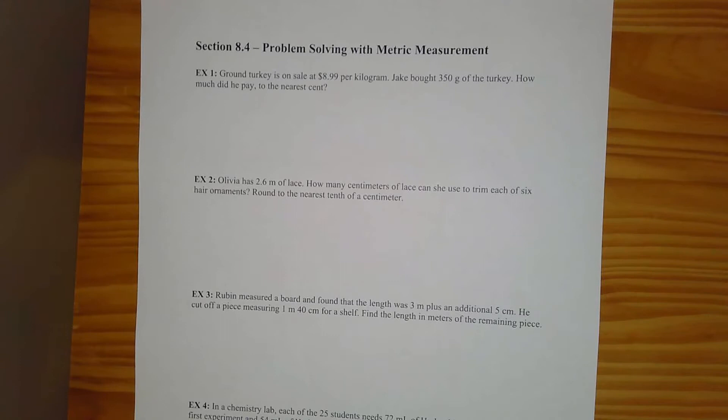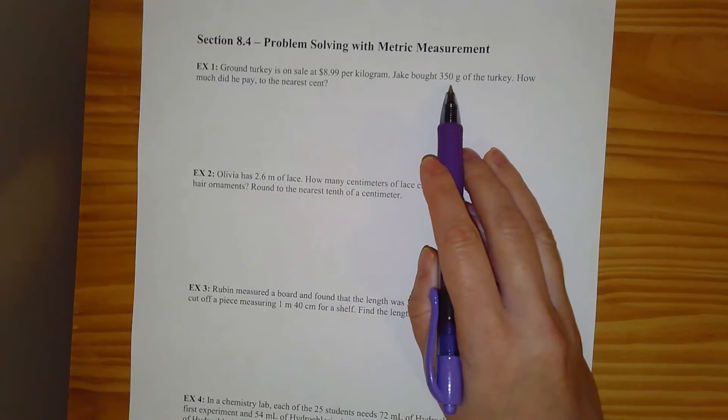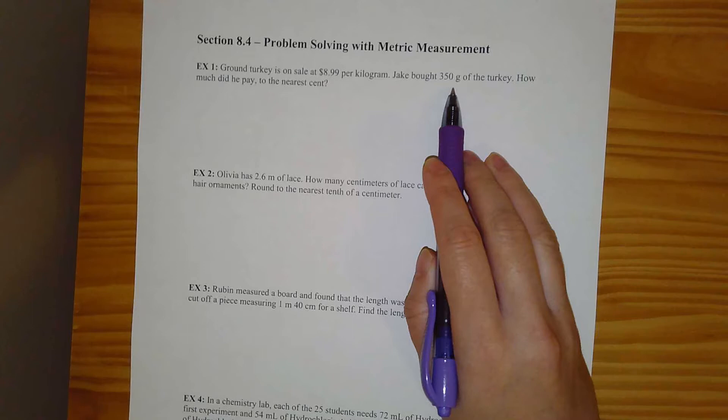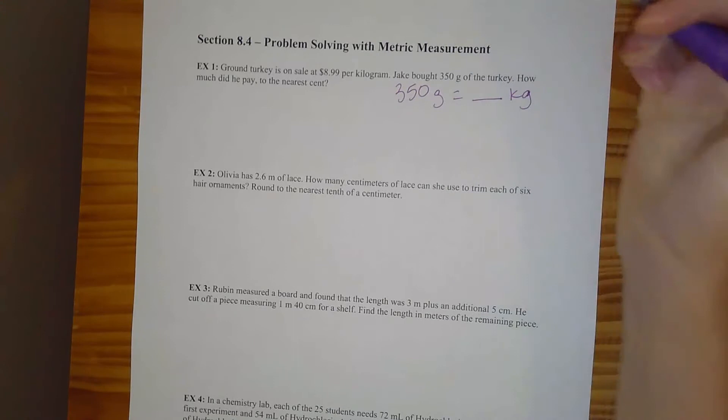The first thing I notice is that the ground turkey is on sale for $8.99 per kilogram, but we're not given kilograms — we're given grams. So my first step is going to be converting from grams to kilograms so they're in the same units. That first step is: 350 grams equals how many kilograms?